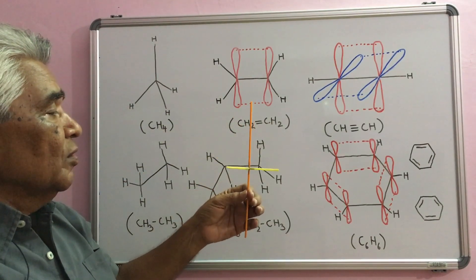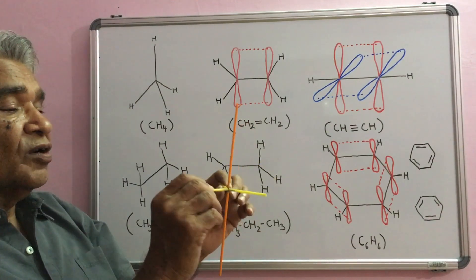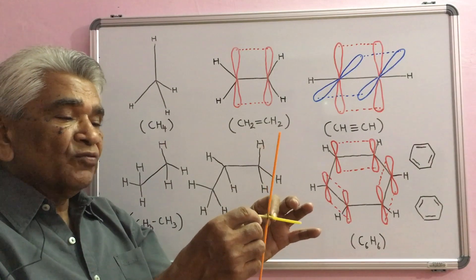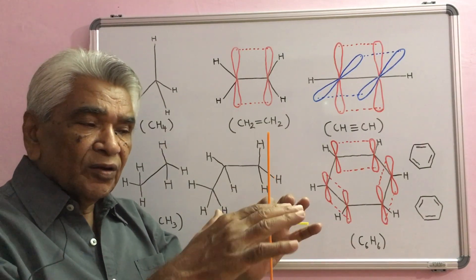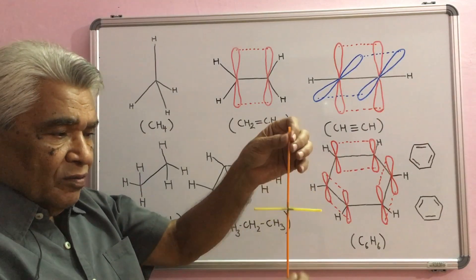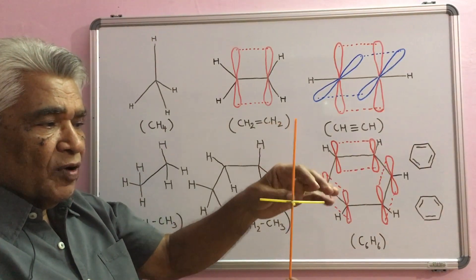This sp2 hybridized carbon looks like this. These are three sp2 orbitals at 120 degrees to each other in one plane. This is a p orbital standing here, all having one electron each.